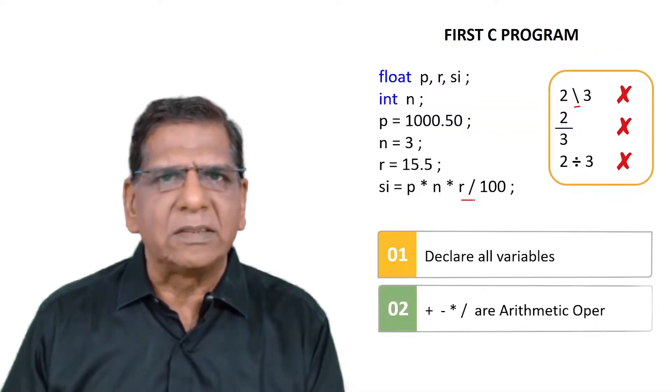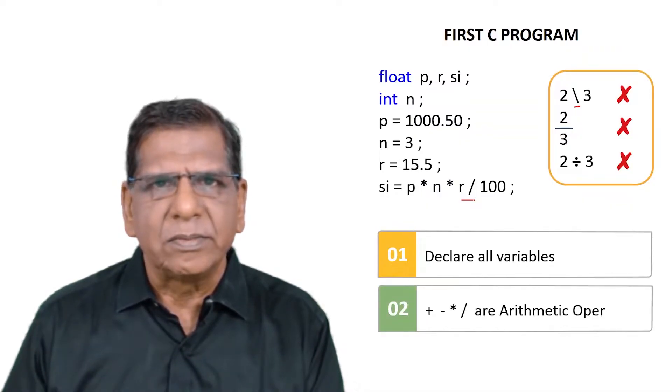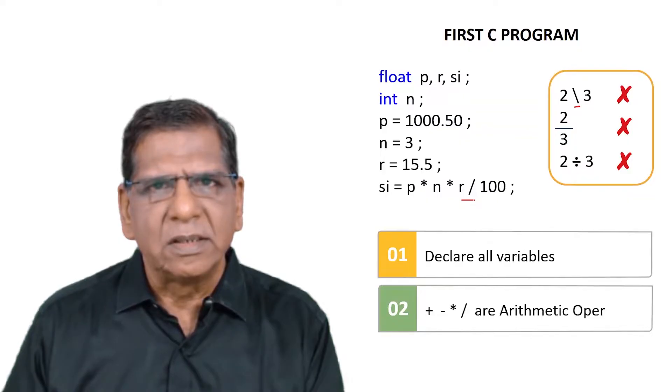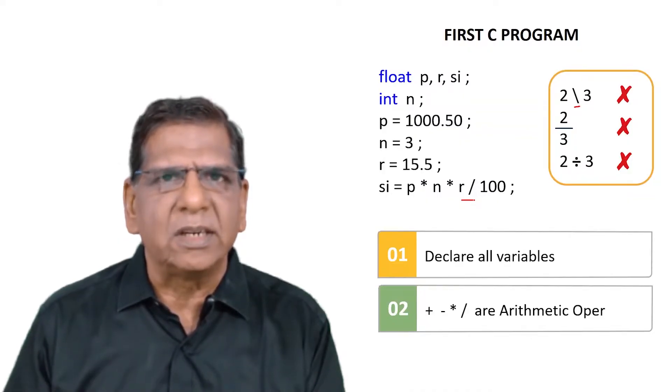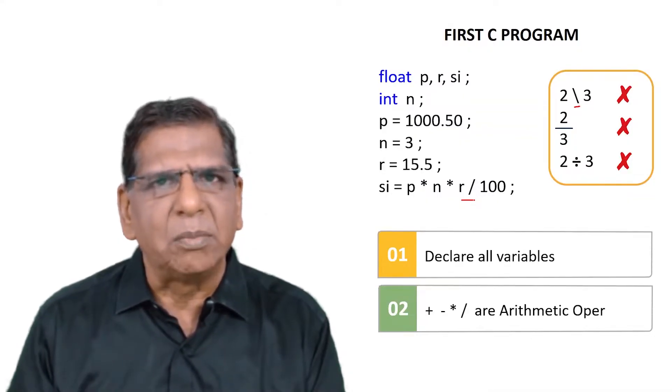So every variable must be declared. That's the first rule that we have learned. Secondly, these plus minus star slash are arithmetic operators. The way slash is used for division, star is used for the multiplication operation.